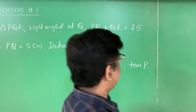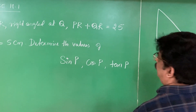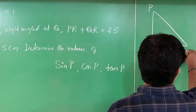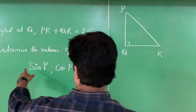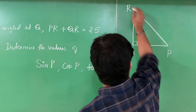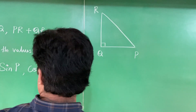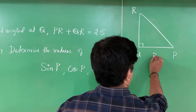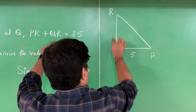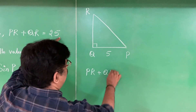As far as trigonometry is concerned, we analyze the problem. There is a triangle PQR, right angle at Q. I write P at the top and R at the base — it is easy that way. PQR is a right angle triangle. PQ is 5 — this measurement is given. And he is given PR plus QR is equal to 25.